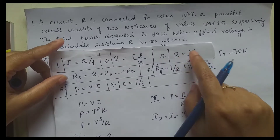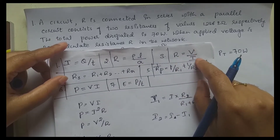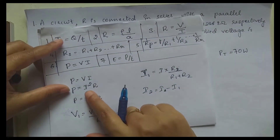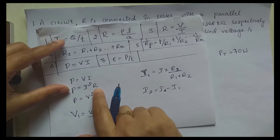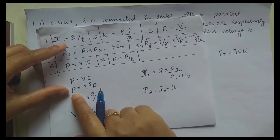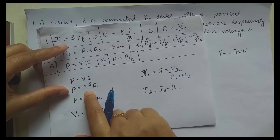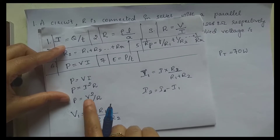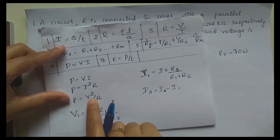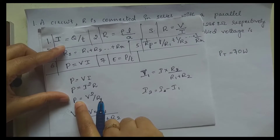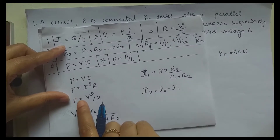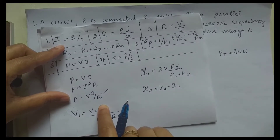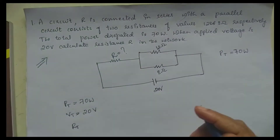Using R = V/I, we can calculate R, but we don't know the value of current I. Using P = VI, we know total power but not the current. The next option is P = V² / R. We know VT and we know total power PT, so this is the formula we will use to calculate RT.